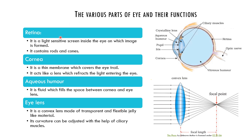The first part is the retina. This is the inner layer of the eye. It is a light-sensitive screen inside the eye on which the image is formed. The retina is very sensitive to light and the image always forms on the retina. It contains rods and cones.